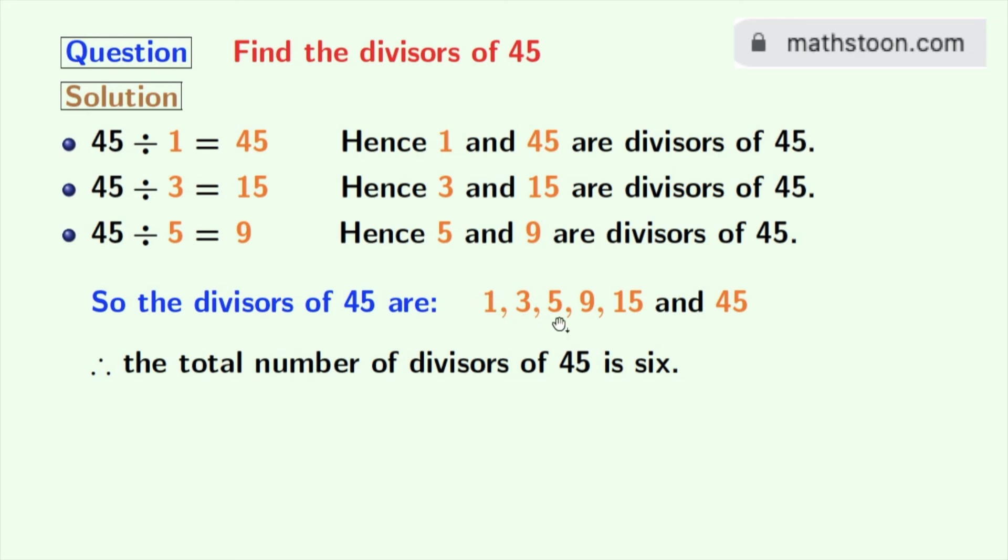Now if we look at these divisors we can see that 3 and 5 among these numbers are prime numbers, because these two numbers do not have any divisor other than 1 and the number itself. So we can say that the prime divisors of 45 are 3 and 5.